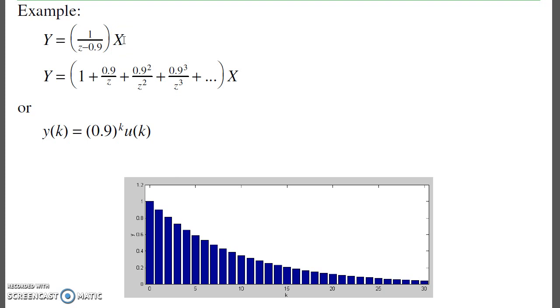That'd be a recursive filter. For an infinite impulse response filter, if I give it an impulse, the output decays as 0.9 to the k, which lasts for an infinite amount of time, hence the name infinite impulse response filter.